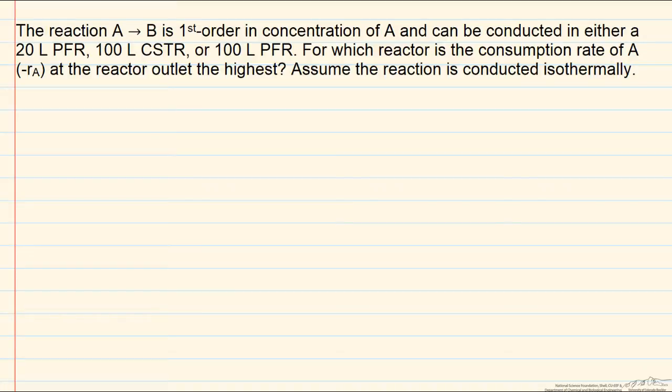In this screencast, we're trying to determine which of three different reactors — a 20-liter PFR, a 100-liter CSTR, or a 100-liter PFR — will have the highest consumption rate of the reactant A at the reactor outlet for this first-order A to B isomerization type reaction.